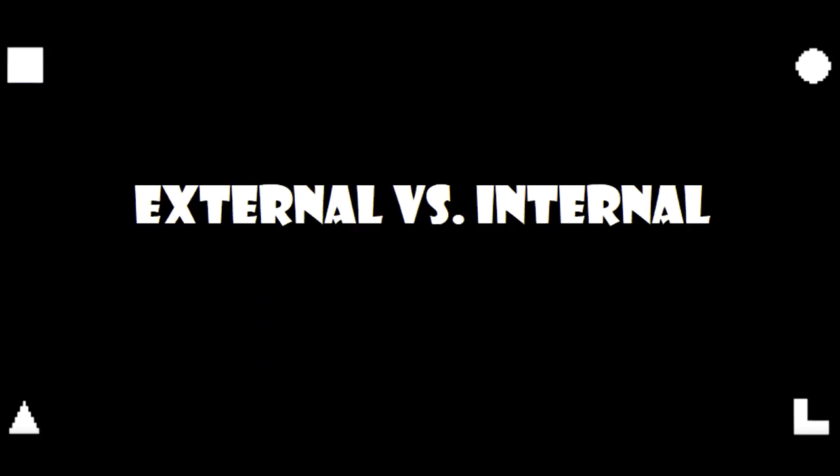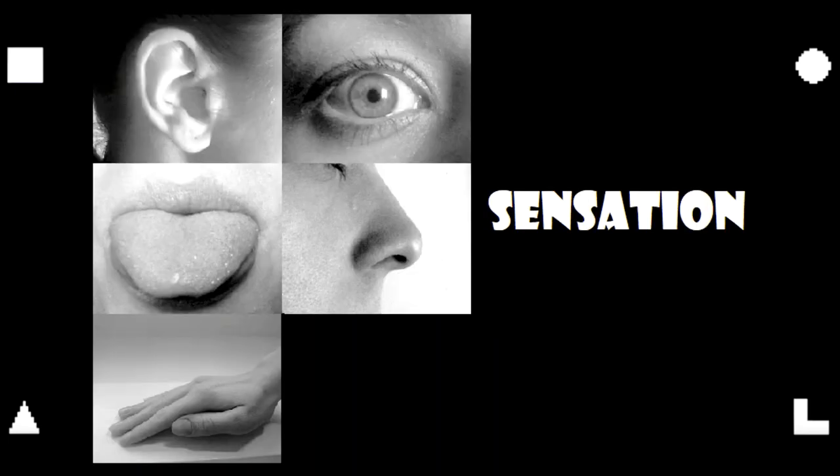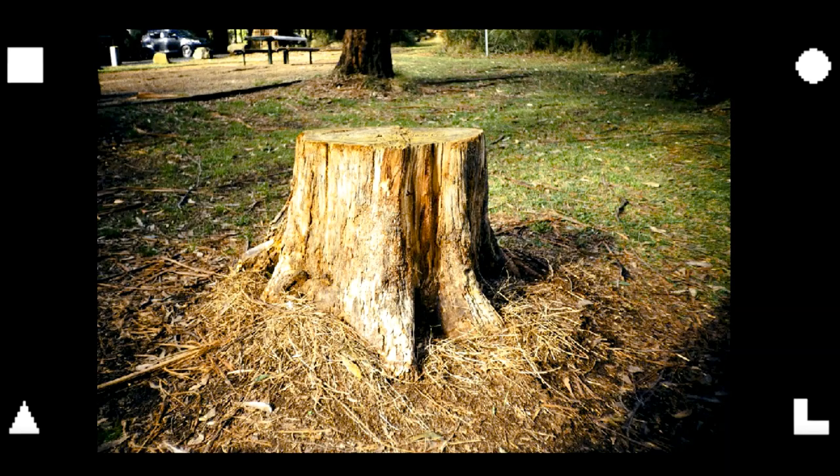The first of these is external and internal. This is all about how objective and shareable, or subjective and interpreted, a kind of information is. Sensation would be external, as it is concrete and grounded in reality. If I were to point out a kind of sensation, say a tree stump, and say that it's rather stumpy, you would be able to see that same tree stump and heartily agree on its stumpiness.